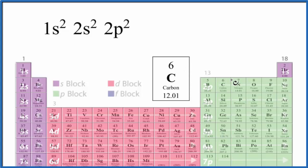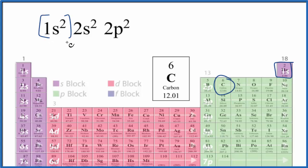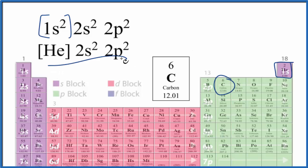We find carbon on the periodic table and go back to the noble gas before it — that's helium again. So we put our brackets around helium and write the condensed electron configuration for carbon.